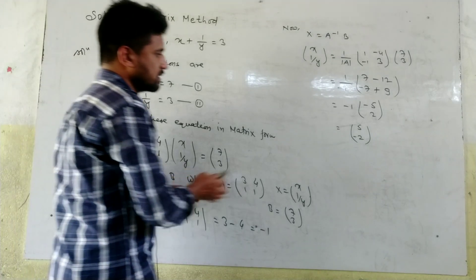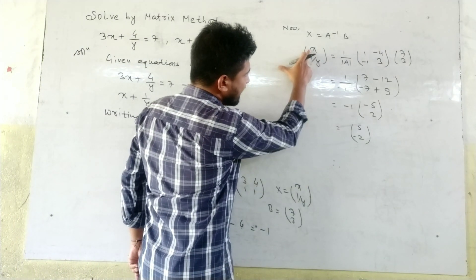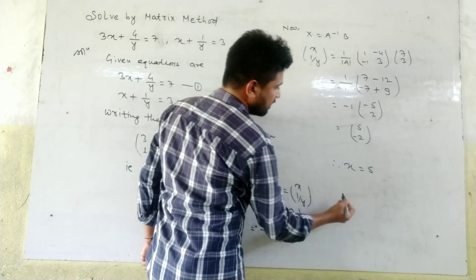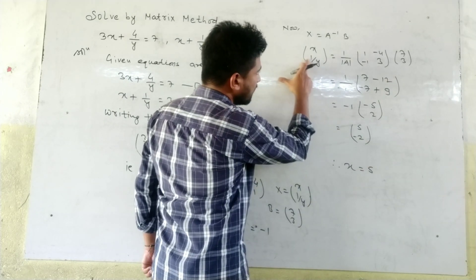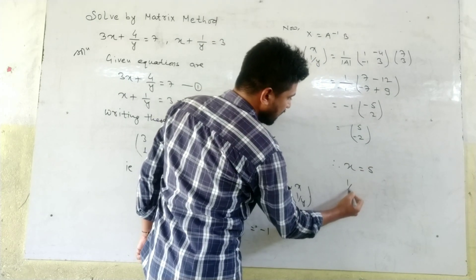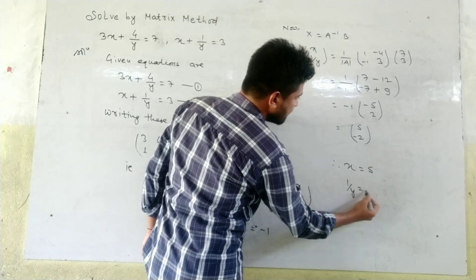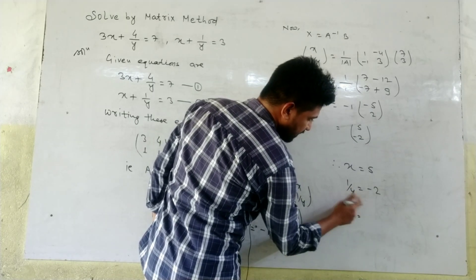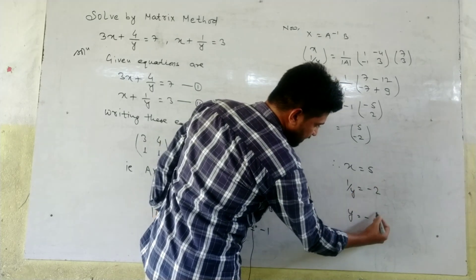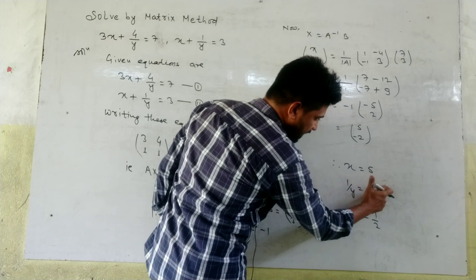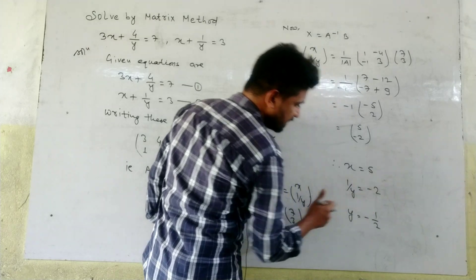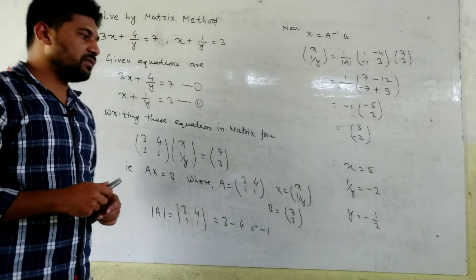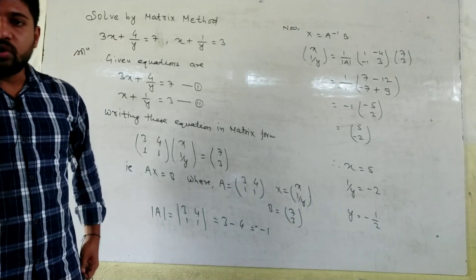Therefore, x is equal to 5. Similarly, 1 over y is equal to minus 2, so y is equal to minus 1 over 2. The value of x is 5 and the value of y is minus 1 over 2.